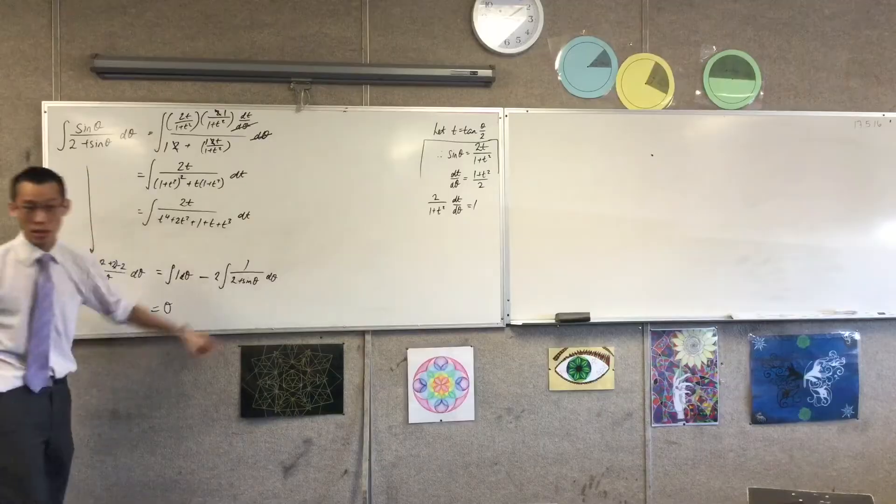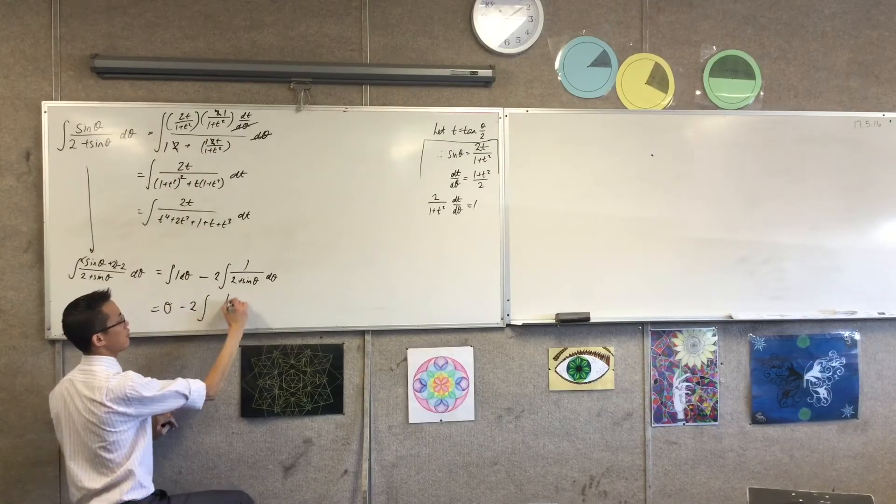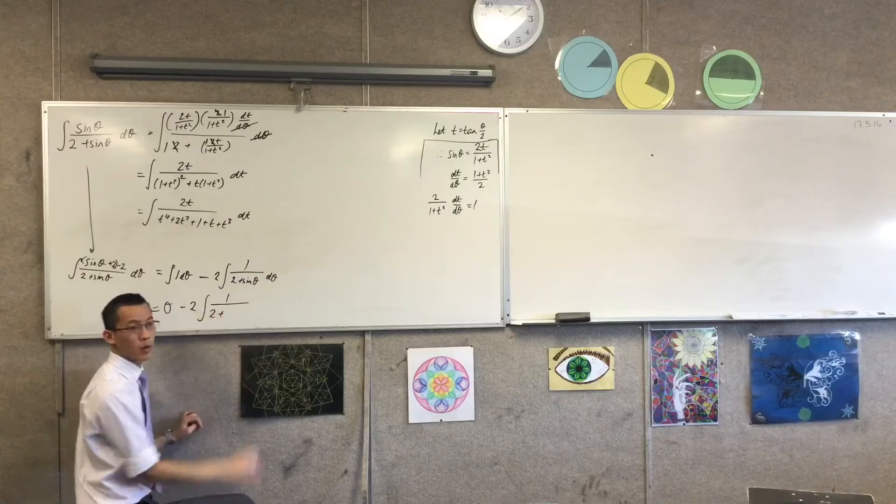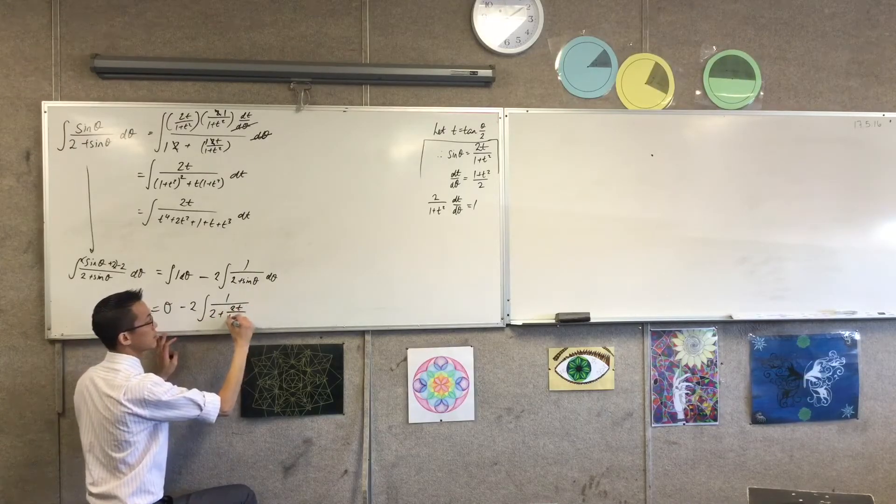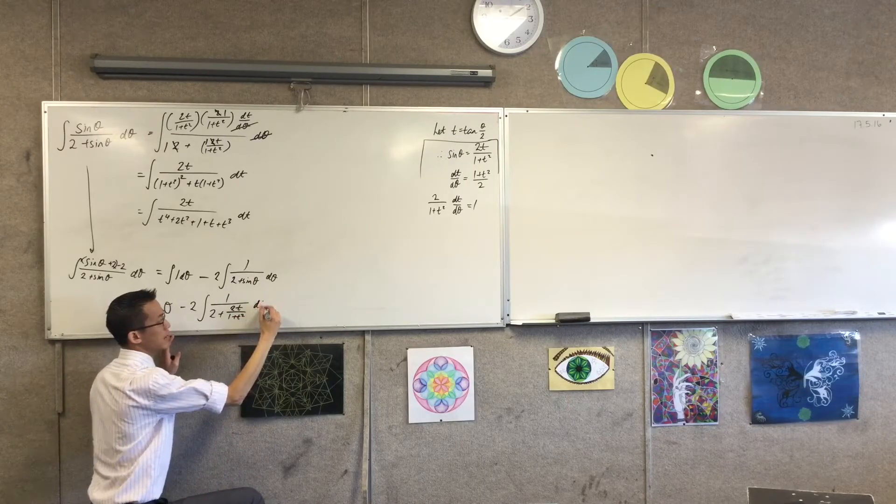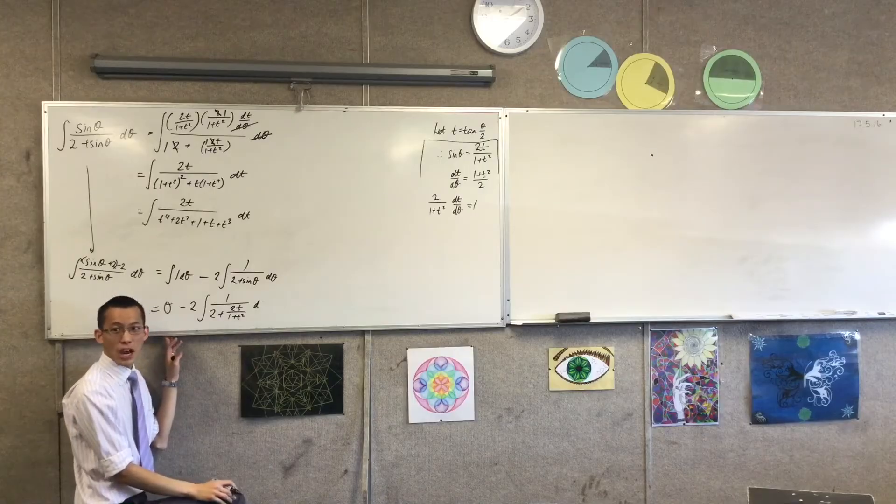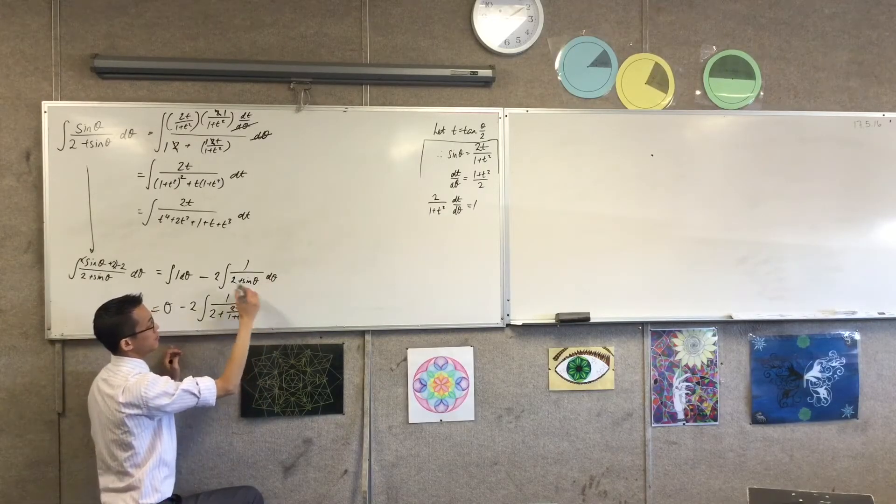Okay, so I'm going to do the substitution up here and then I'm going to simplify it over there. So what have I got here? Minus 2, integral of 1 on 2 plus t squared. Yep. D theta. Now, hold on. I need to change the variable of integration, right?